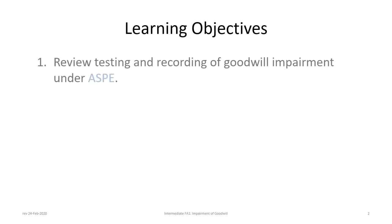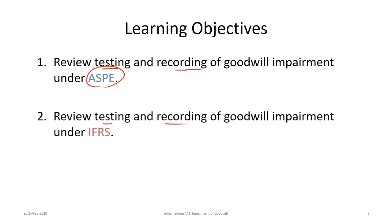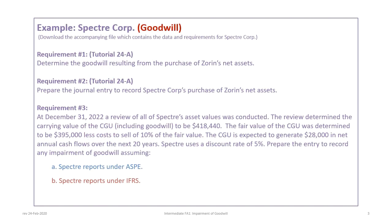There are two learning objectives for this tutorial: first, to review the testing and recording of goodwill impairment under ASPE, and second, to review testing and recording of goodwill impairment under IFRS. This tutorial continues with the SpectreCorp example from tutorial 24a, so please make sure you have downloaded the file. In 24a we covered requirements 1 and 2; now in 24b we will cover requirement 3, which requires us to account for any impairment of goodwill under ASPE and IFRS.